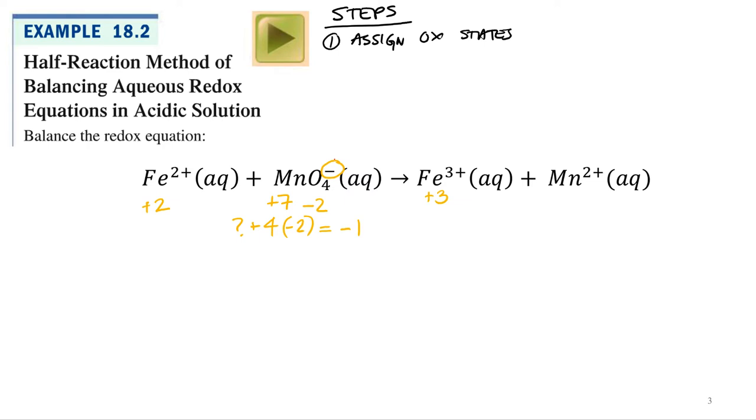So just look at the charge of the polyatomic ion, or if it's a molecule, the charge is 0. What about that manganese plus 2? Plus 2. All right, so let's see what's changed. Iron went from a plus 2 to a plus 3. What happened to iron? Lost 1 electron. Manganese went from a plus 7 to a plus 2. What happened to manganese? Gain 5.